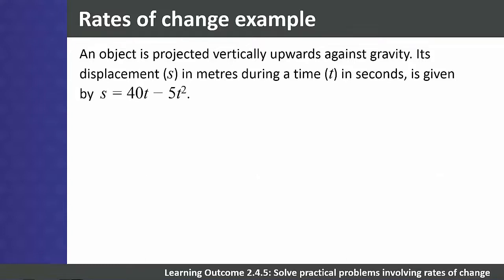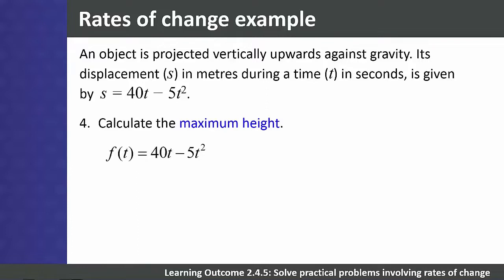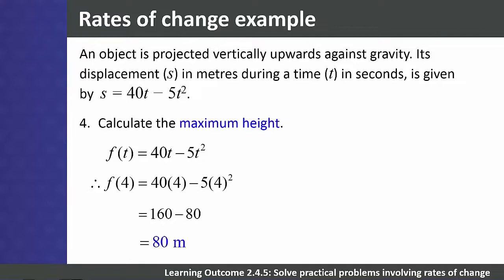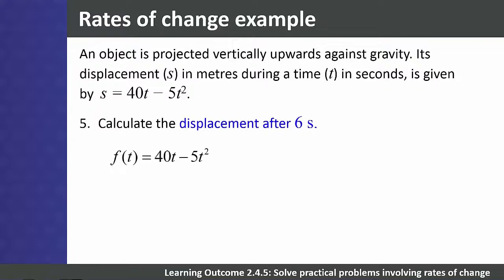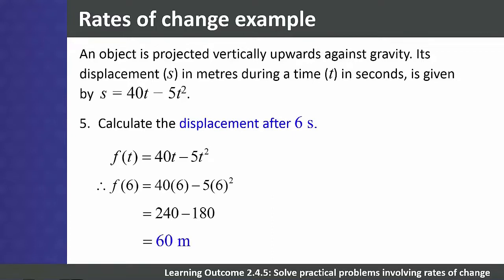Question 4: calculate the maximum height. We substitute t = 4 into the displacement equation and solve to find a maximum height of 80 meters. Question 5: calculate the displacement after 6 seconds. Substituting t = 6 gives a displacement of 60 meters.